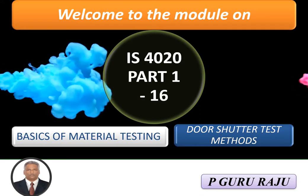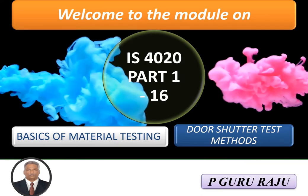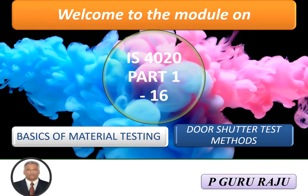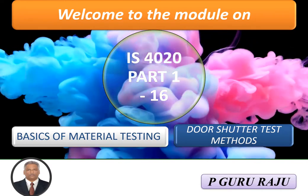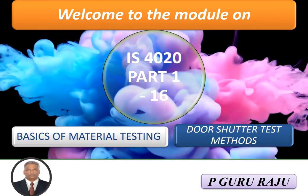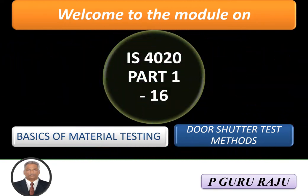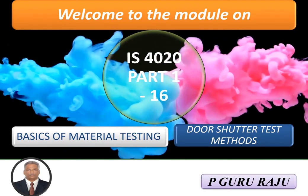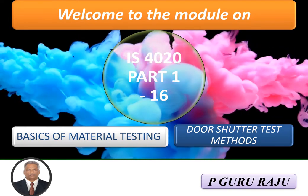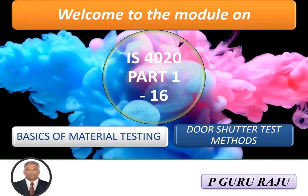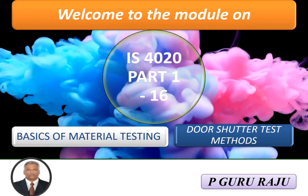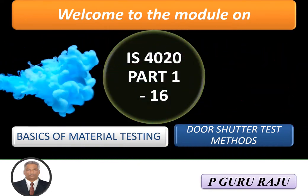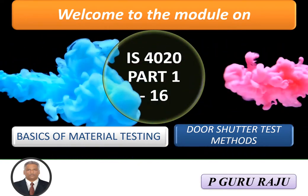Welcome to the module on basics of material testing. Today we will be covering the different tests which are applicable for door shutters as per IS 4020 part 1 to part 16. Each part consists of one type of test and each type of test we will be discussing in detail in this module.